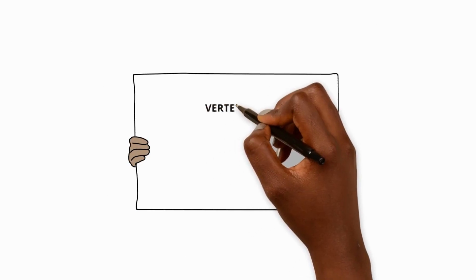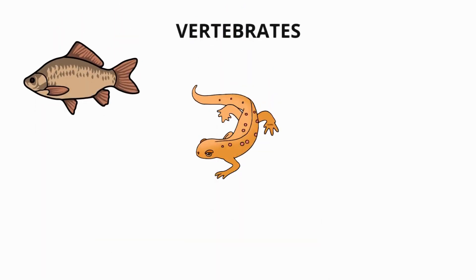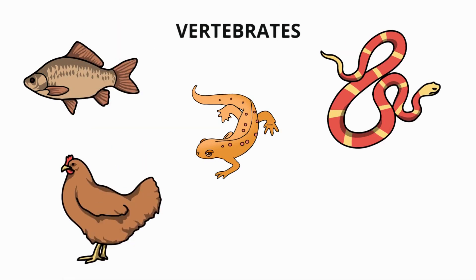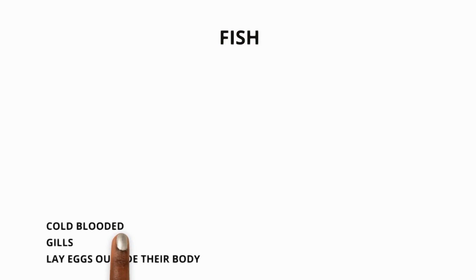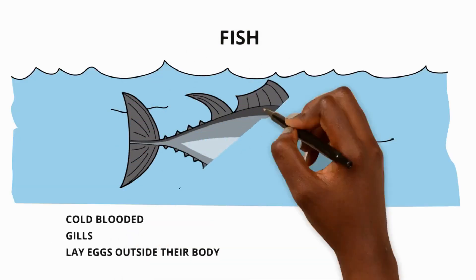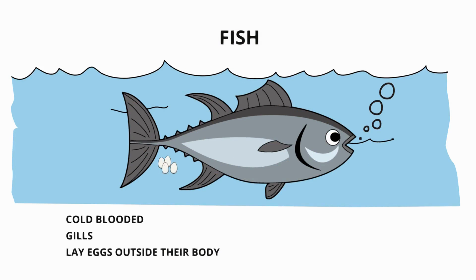Let's look at vertebrates first of all. These include fish, amphibians, reptiles, birds and mammals. Fish are cold-blooded animals that live in water and breathe through their gills. Did you know that fish have wet scales and lay soft eggs outside their bodies?